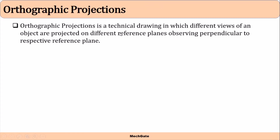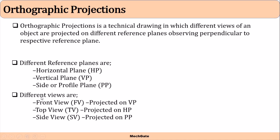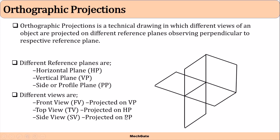Orthographic projection is nothing but a technical drawing in which different views of an object are projected on different reference planes, observed perpendicular to the respective reference plane. These are the different reference planes: horizontal plane (HP), vertical plane (VP), and side view or profile plane (PP). Front views are projected on the vertical plane, top views on the horizontal plane, and side views on the profile plane.